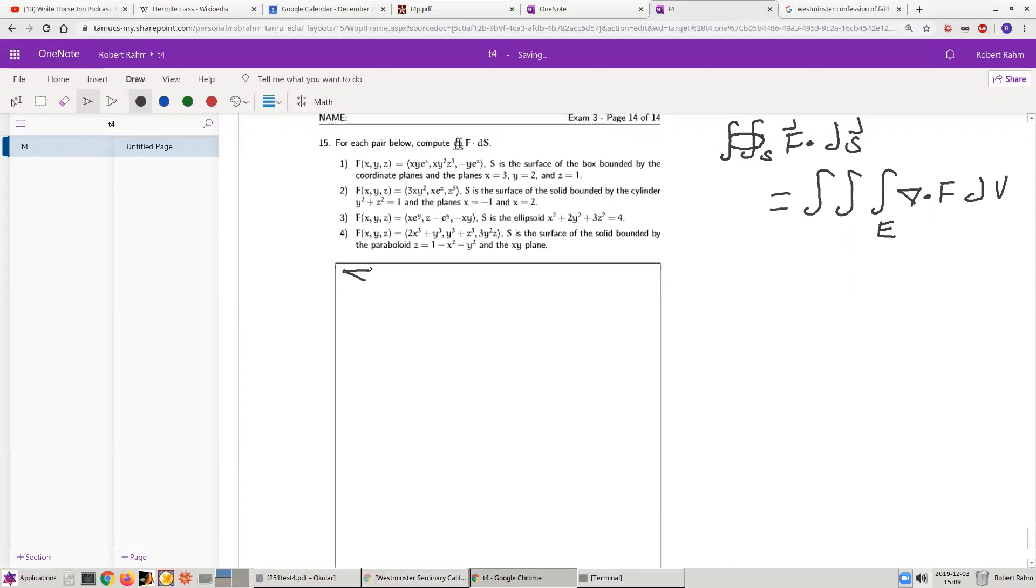Okay, so first the divergence of f, remember this is just the partial x derivative, the partial y derivative, the partial z derivative dotted with the vector. So this is x y e to the z, x y squared, z cubed minus y e to the z.